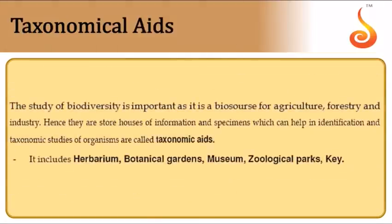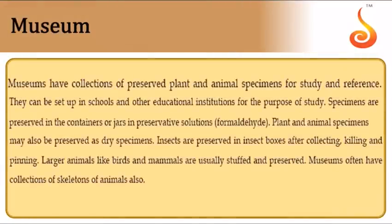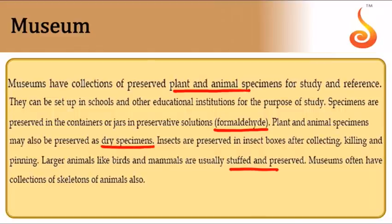Taxonomic aids that help in the science of taxonomy include herbarium, botanical gardens, museums, zoological parks, and keys. Museums have preserved animal and plant specimens — they may be preserved in formaldehyde in jars, or as dry or stuffed specimens in the case of animals.